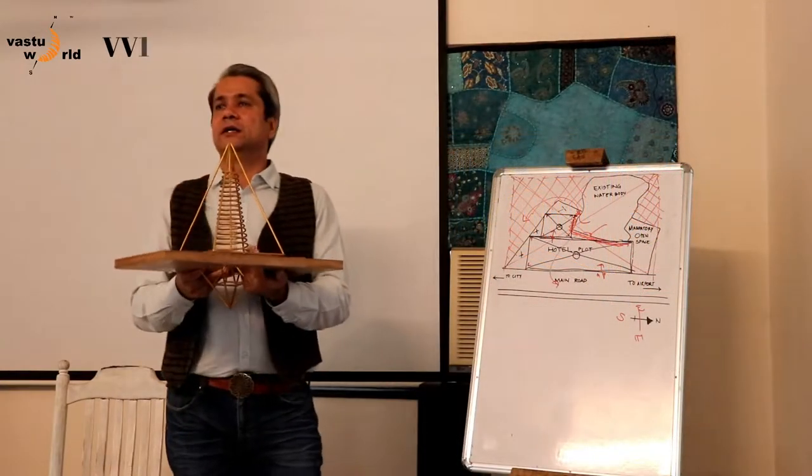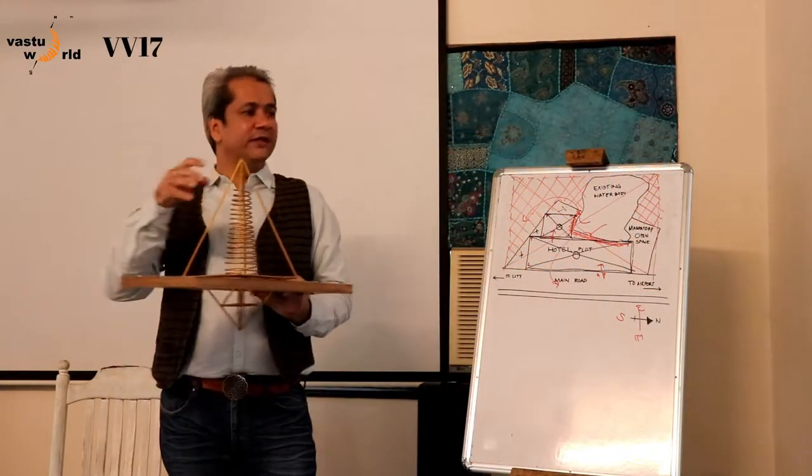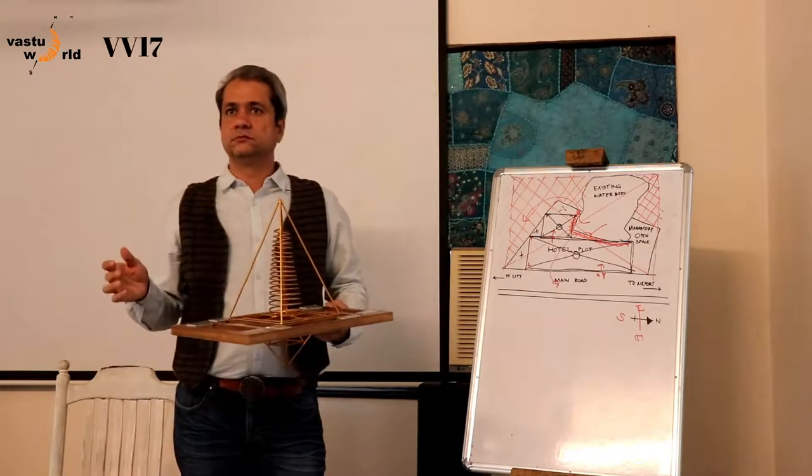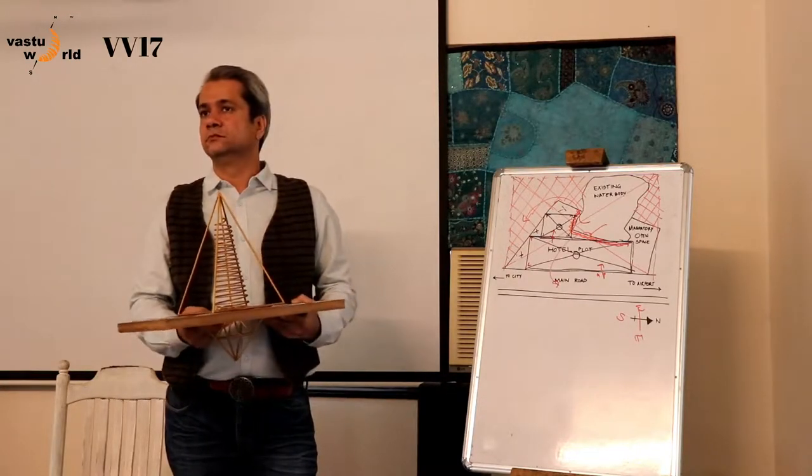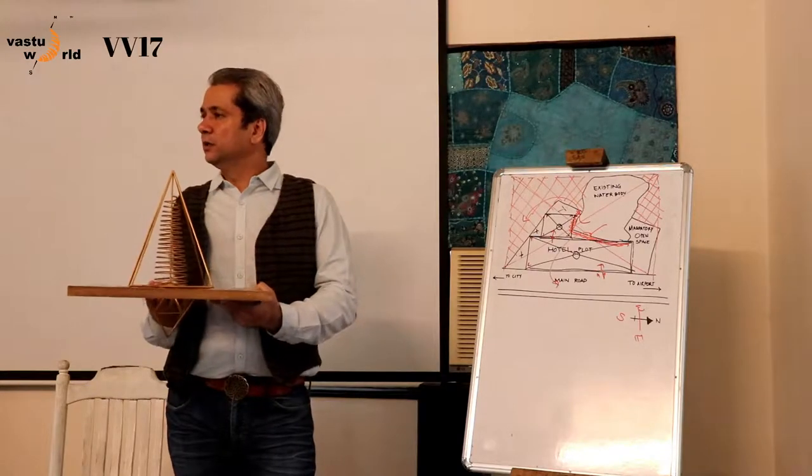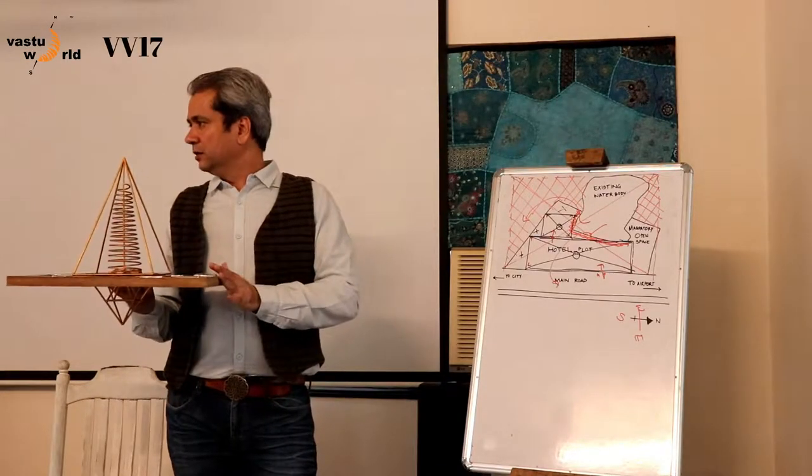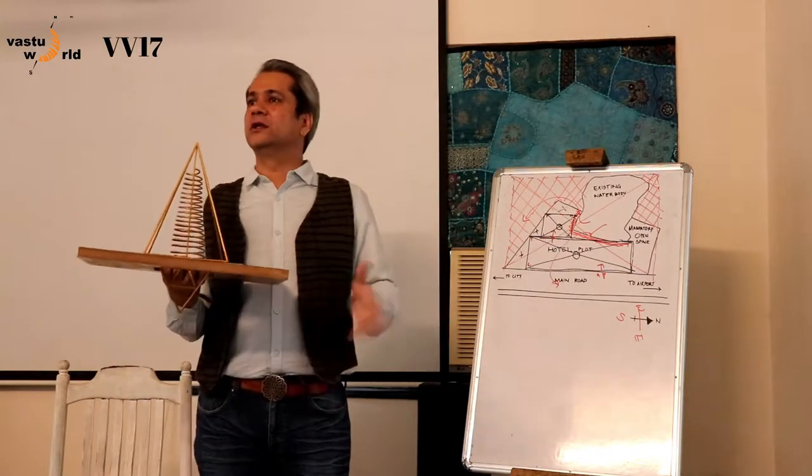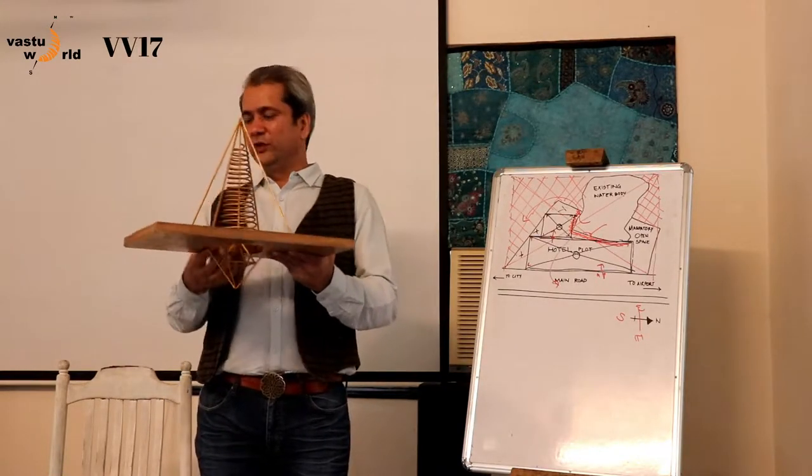This is called VV17. This is the most basic geopathic reversal. This is for the smallest or till 1 acre. So if you have 200 square feet or 500 or 1000 or 10,000 till 40,000 square feet you can use this.